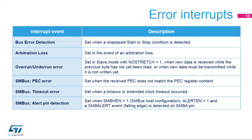Several error flags can be generated. A Bus Error Detection flag is set when a misplaced start or stop condition is detected. The Arbitration Loss flag is set in the event of an arbitration loss. An Overrun or Underrun Error flag is set in slave mode with clock stretching disabled when an overrun or underrun error is detected. In SMBus mode, a PEC Error flag is set when the received PEC does not match the calculated PEC register content. A Timeout Error flag is set when a timeout or extended clock timeout is detected. An Alert pin detection flag is set in the SMBus host configuration when Alert is enabled and a falling edge is detected on the SMBA pin.